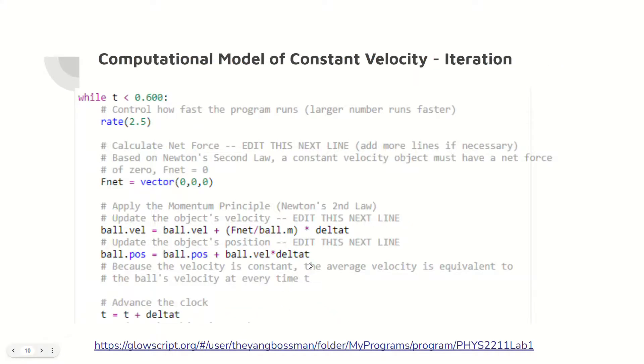The motion of the baseball is computed through iterations with the change in time of 1 sixtieth of a second, which is done computationally with a while loop that goes until 0.6 seconds. The net force is zero in all directions to allow for constant velocity to occur. The velocity update formula and the position update formula are located here and here.